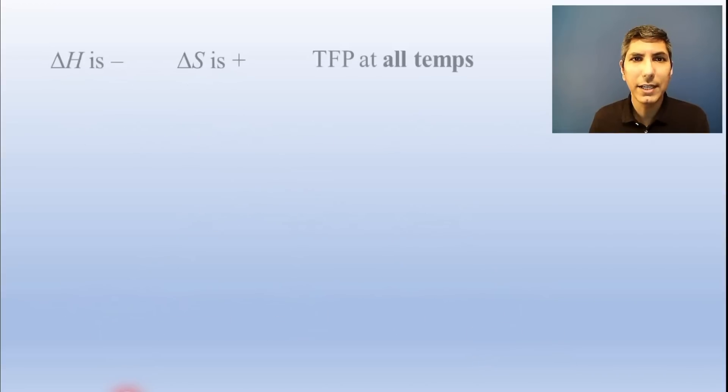The universe tends to favor exothermic reactions, which have negative values of delta H. The universe also tends to favor reactions where entropy is increasing, which has a positive value for delta S. So if you encounter a reaction that meets both of those conditions, then it will be thermodynamically favored at all temperatures. On the other hand, if a reaction is both endothermic and decreasing in entropy, then it won't be favored at any temperature.